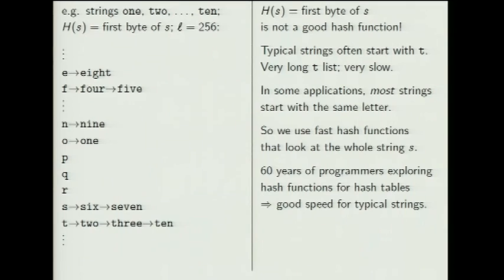No matter how many linked lists you have, if your hash function does a bad job of distributing strings through linked lists, you won't get good performance. Linked lists are slow; hash tables are supposed to be fast by making the linked lists short. So you need to somehow look at the whole string and compute an index modulo L from the entire string, not just the first byte.